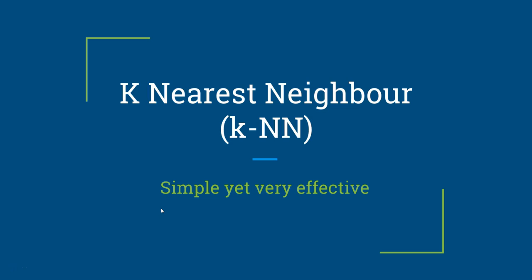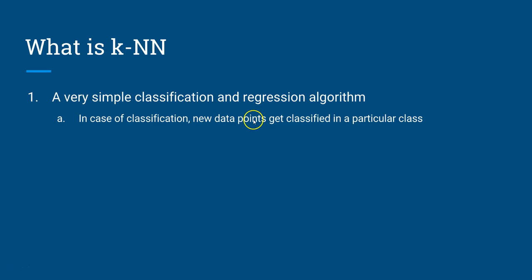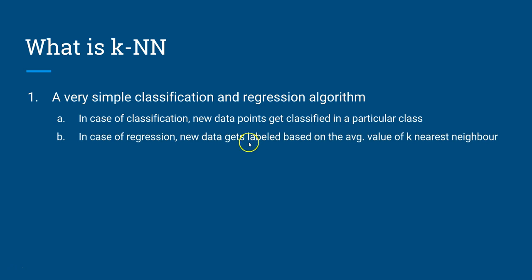Hi, this is Abhishek, and in this video I will talk about the K-nearest neighbor algorithm that you can use for classification and regression tasks. KNN is a very simple method for classification and regression. In classification, new data points get classified into a particular class, and in regression, new data gets labeled based on the average value of K nearest neighbors. K is the value provided to the algorithm.